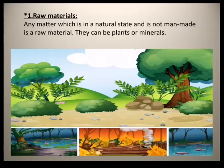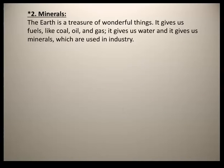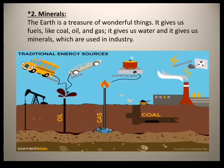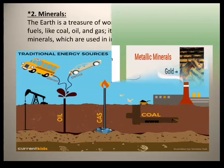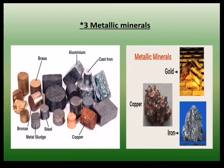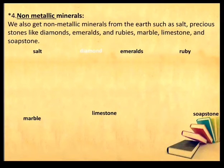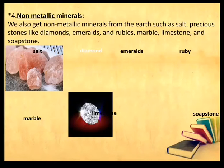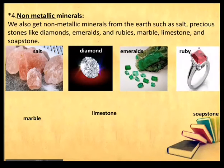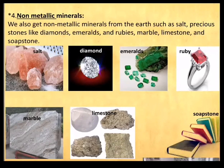Raw materials can be plants or minerals. The earth is a treasure of wonderful things. It gives us fuels like coal, oil and gas, and it gives us water. It also gives us minerals used in industry. Metallic minerals include iron ore, copper, gold and silver. Non-metallic minerals include salt, precious stones like diamonds, emeralds and rubies, marble, limestone and soapstone.